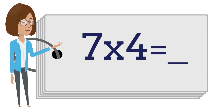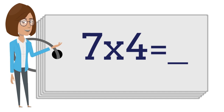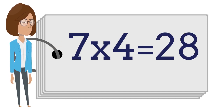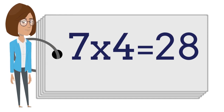Seven times four is — say the answer out loud. Seven times four is 28.